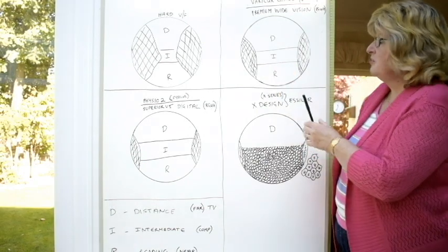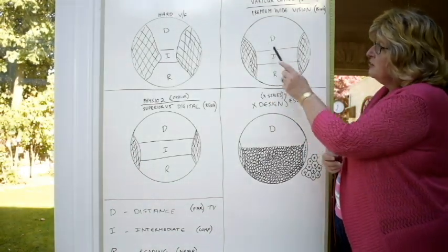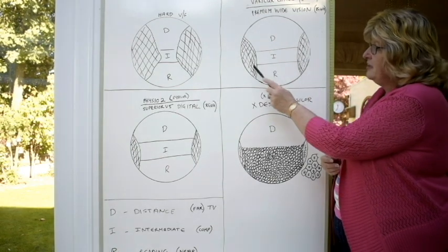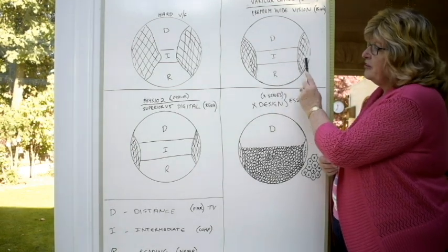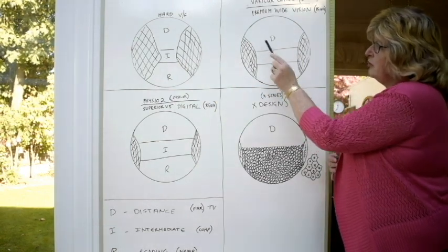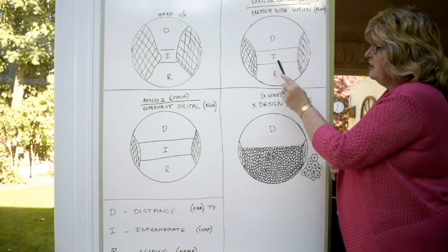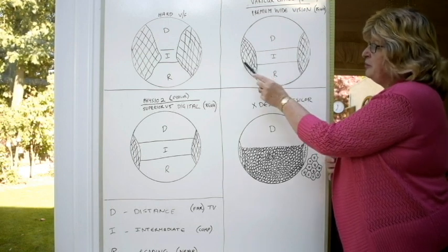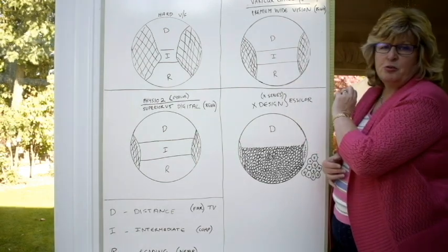Then you're coming to an upgrade of those. You'll see it's distance, intermediate and reading, just the same, but the areas here of distortion towards the edges are a lot less. So with this one, you've got a really good distance area, you've got a good reading area. Intermediate is okay, but you have still got a fair bit of distortion going towards the edges.